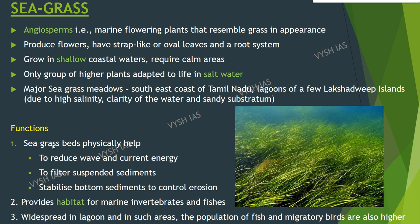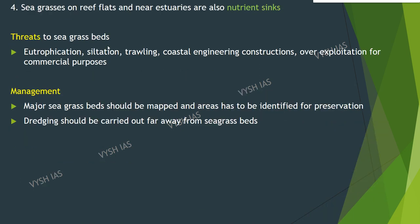Functions of sea grass beds: They physically help to reduce wave and current energy, filter suspended sediments, stabilize bottom sediments and control erosion. They provide habitat for marine invertebrates and fishes. They are widespread in lagoons and in such areas the population of fish and migratory birds is higher due to availability of food. Sea grasses on reef flats and near estuaries are also nutrient sinks.